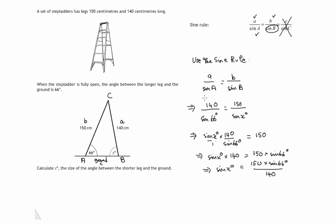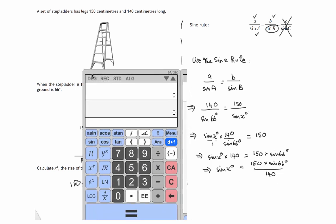There's another way you may have been taught: invert both fractions, so sine 66 over 140 equals sine x over 150, then multiply both sides by 150 so 150 appears on the top of the left-hand fraction. That gets down to the same result we already had.